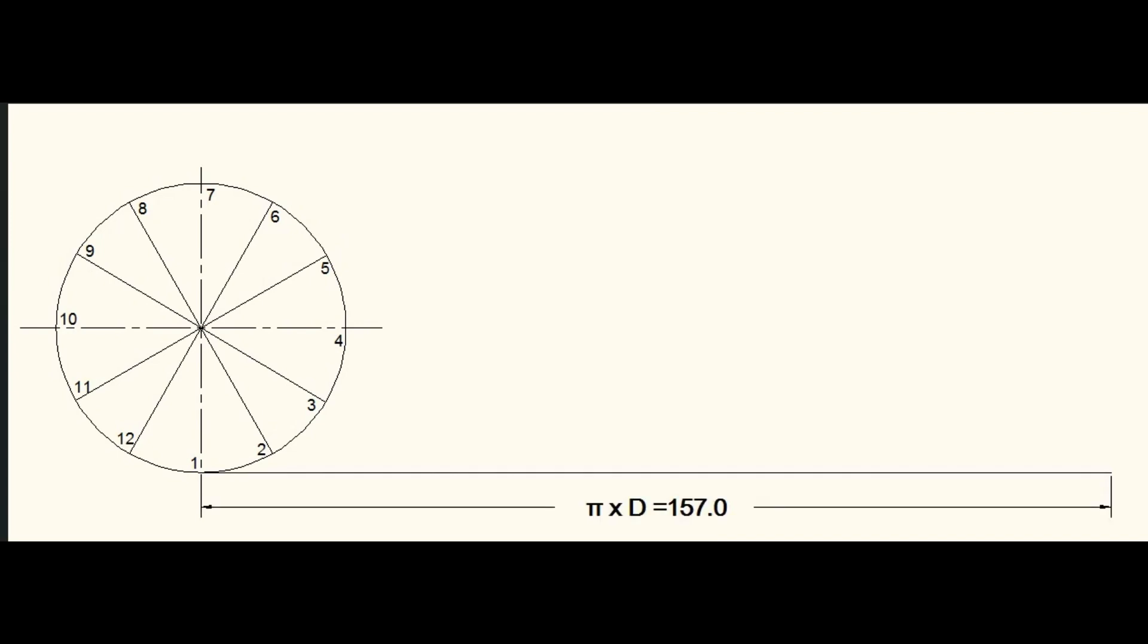A horizontal line is to be drawn from the bottommost point, that is point number 1. That point is touching the ground surface. Length of the horizontal line must be equal to the perimeter of the circle. That is the distance traveled by the circle for one complete revolution.